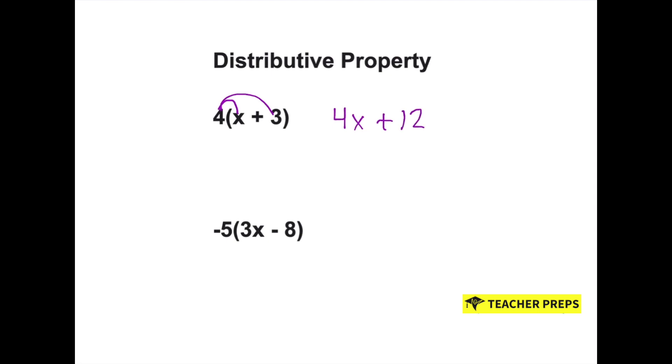Again, we're writing an expression. So you have to have a plus or a minus in between your terms. Pause the video and try the next one on your own. Now let's see how you did. You should have gotten negative 15x plus 40.